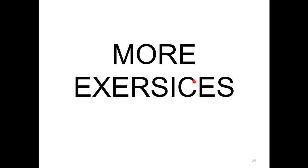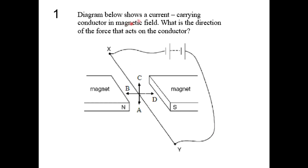Now 10 objective questions — pause the video for 1.5 minutes and try them before continuing. Question 1: a current-carrying conductor XY is connected to a dry cell in a magnetic field with north-south poles. The current flows from Y to X (going in). Using Fleming's left-hand rule with pointer pointing north-to-south and center finger inward, the thumb points downward. The answer is A.